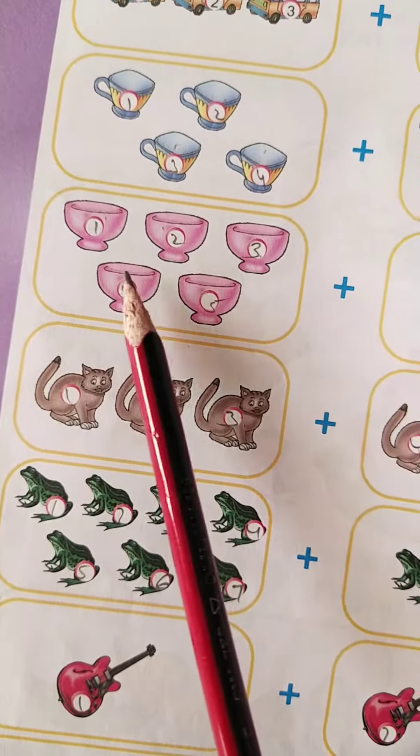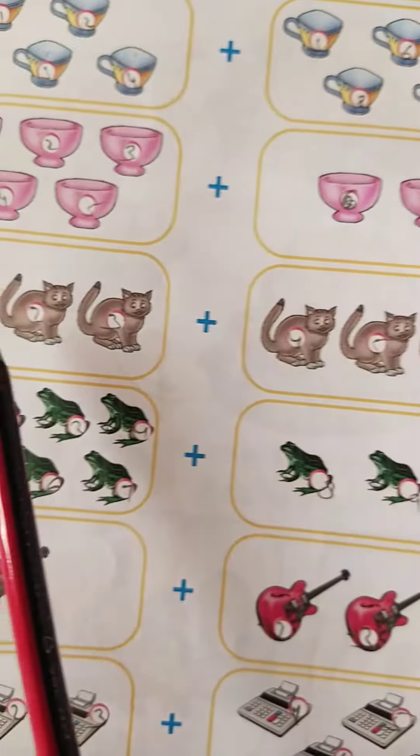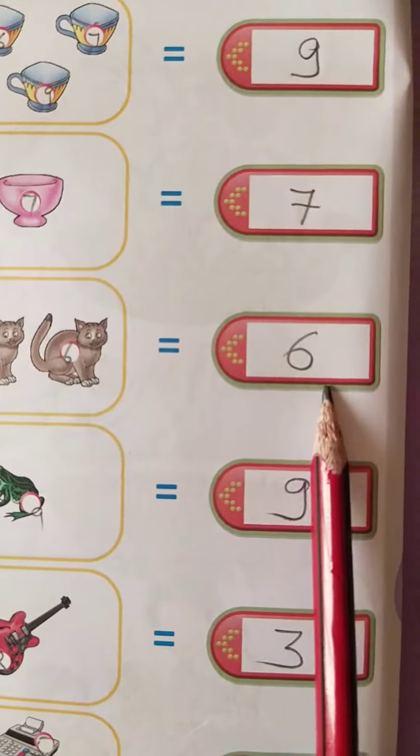And here 1, 2, 3, 4, 5, 6, 7. Here you will write 7. 1, 2, 3, 4, 5, 6. So you will write 6.